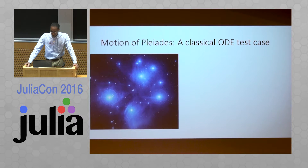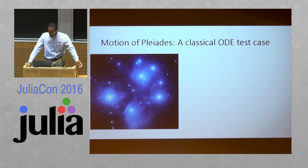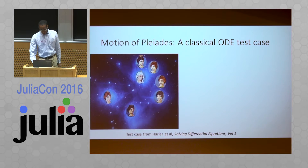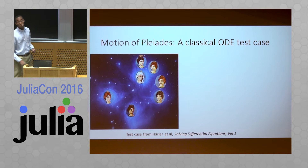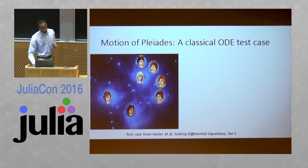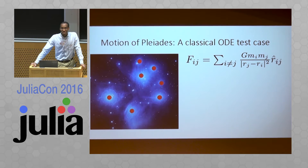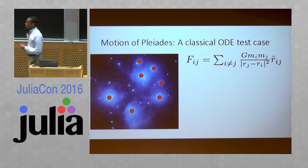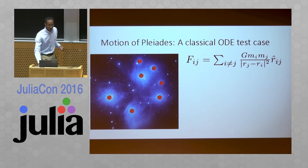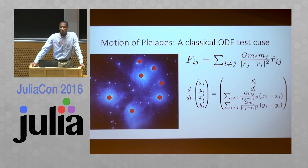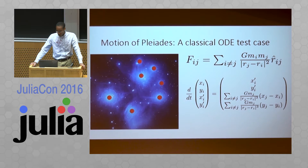We're going to be concerned with the motion of the Pleiades star constellation. People have been concerned about these stars for quite some time. The Greeks thought that they were seven sisters that danced around. We now know we can model these as seven particles which are moving around because of gravitational forces. So Newton's second law is going to give us how the position and velocity changes depending on the location of these particles.